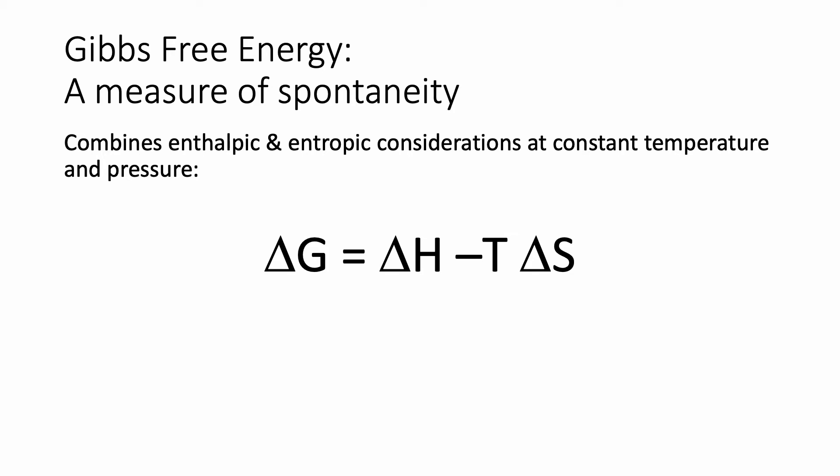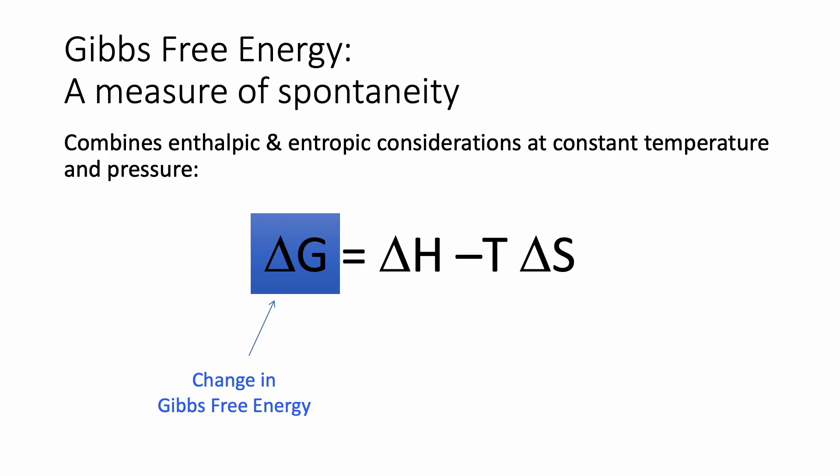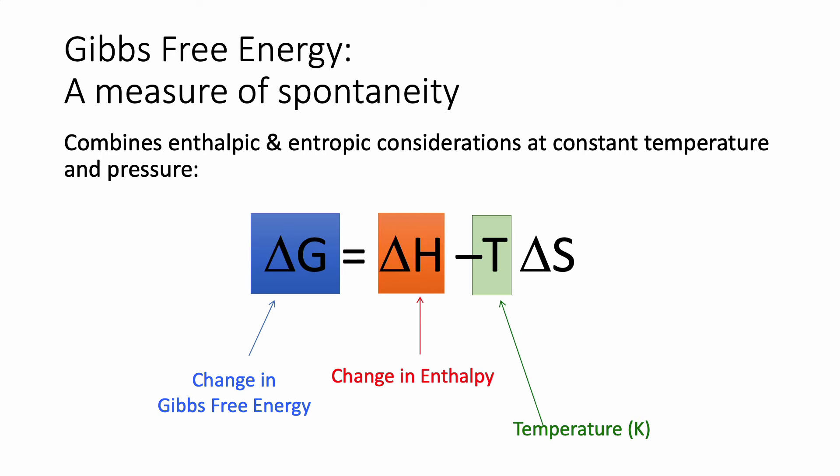Gibbs free energy looks at both enthalpy and entropy at a given temperature and pressure. We're looking at the change that occurs because a reaction is happening. So the change in Gibbs free energy from the beginning of the reaction to the end is going to be equal to the change in enthalpy of that reaction minus the temperature in Kelvin — it has to be in Kelvin — times the change in entropy. And this will help us evaluate whether or not a reaction is spontaneous.